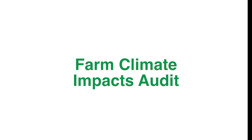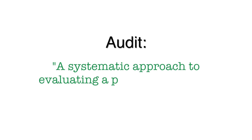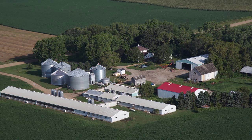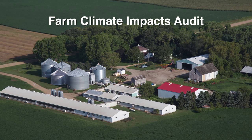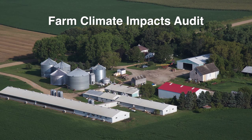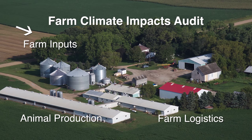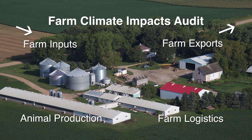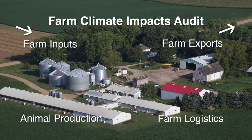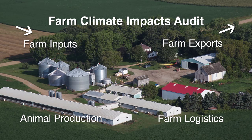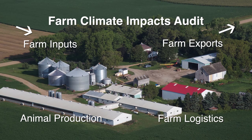The best way to identify climate impacts on the farm is through a farm climate impacts audit. An audit is a systematic approach to evaluating a process or system to identify weaknesses. This lesson will take you through key elements to be evaluated by a farm climate impacts audit. Those elements include farm inputs, animal production, logistics, and farm exports. The elements may differ from farm to farm, so the audit should be conducted with the understanding that each individual farm is unique.